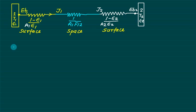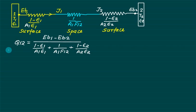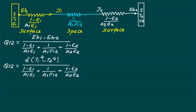We have just seen that if we have two bodies taking heat transfer in radiation, body number 1 and body number 2, the surface resistance is given by (1 - ε₁)/(A₁ε₁), the space resistance is given by 1/(A₁F₁₂), and the surface resistance for body 2 is (1 - ε₂)/(A₂ε₂). The net heat transfer Q₁₂ equals (Eb1 - Eb2) divided by the sum of all three resistances. Replacing Eb1 and Eb2 with σT₁⁴ and σT₂⁴, we get Q₁₂ = σ(T₁⁴ - T₂⁴) divided by the total resistance.